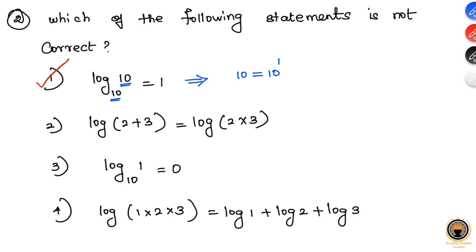Looking at the third option: log 1 to the base 10. We know that 1 equals 10 to the power 0. Any number raised to the power 0 always equals 1, so this option is also correct.